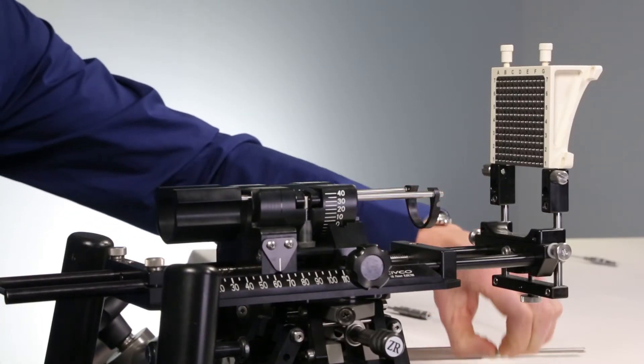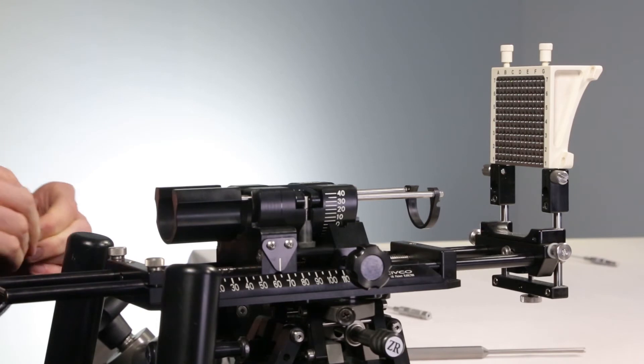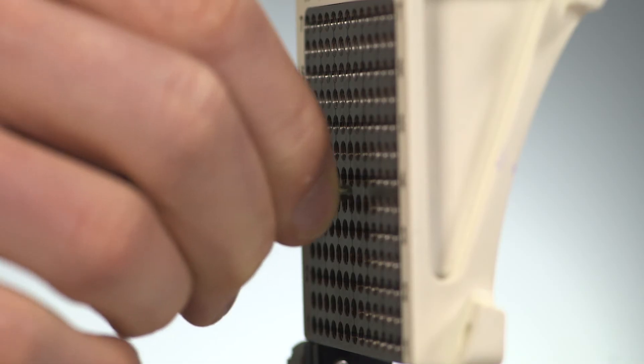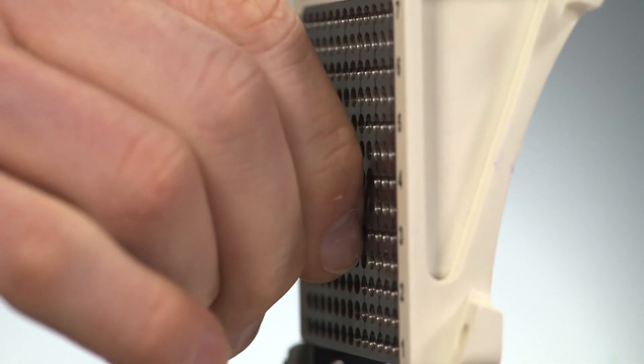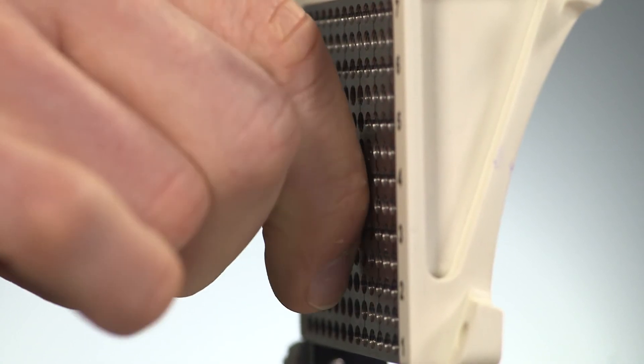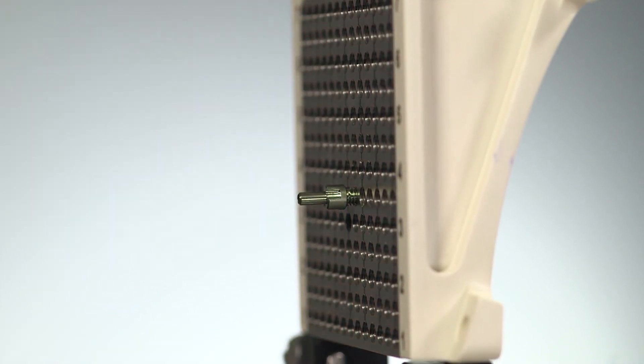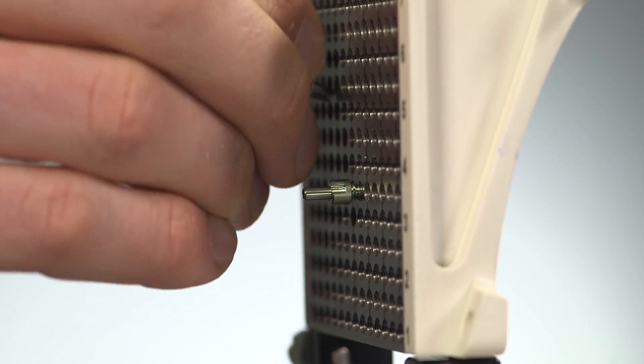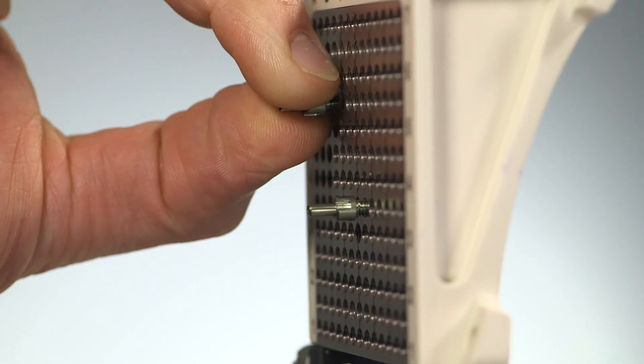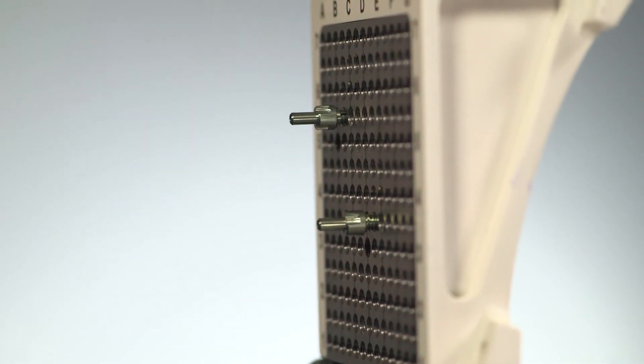Next, we continue with the insertion of the interstitial needles. Prior to the insertion, we can screw in the needle collets to the desired positions. The collets should not be tight. One turn is already sufficient.